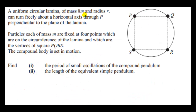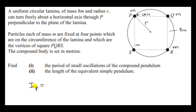A uniform circular lamina of mass 8M and radius R can turn freely about a horizontal axis through point P, perpendicular to the plane of the lamina. Particles each of mass M are fixed at four points on the circumference — the vertices of square PQRS. We want the period of small oscillations of this compound pendulum, so we need the moment of inertia about point P. The particle at P contributes 0 since its distance to P is 0.